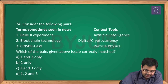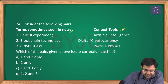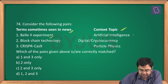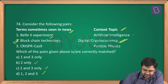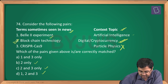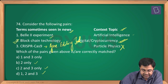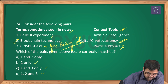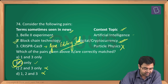Question number 74: terms in the news matched to their context. Blockchain technology matched to digital cryptocurrency — correct. CRISPR-Cas9 matched to particle physics — wrong; it is a gene editing tool, widely in news for the last two years. Since statement 3 is wrong and it appears in multiple options, we are left with statement 2 only, giving option B.